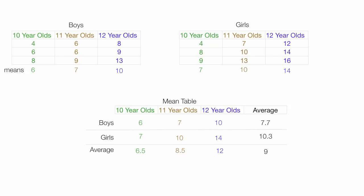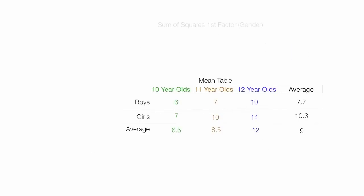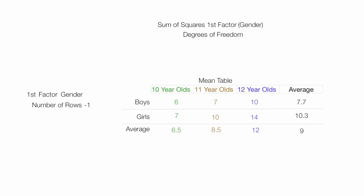Now back to degrees of freedom. The degrees of freedom for the first factor — gender — is calculated by taking the number of rows minus 1. Boys and girls give us 2 rows, so it's 2 minus 1, which equals 1. The degrees of freedom for the first factor is equal to 1.